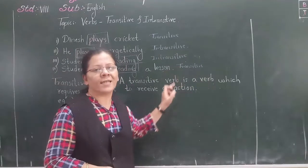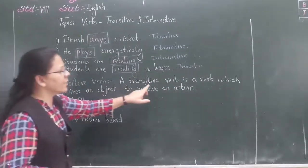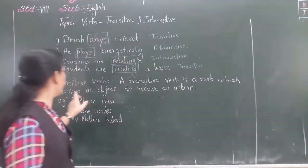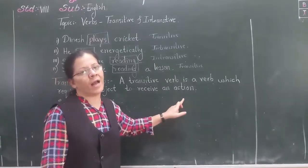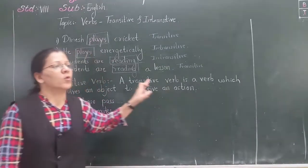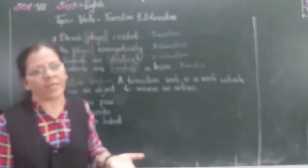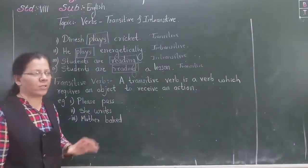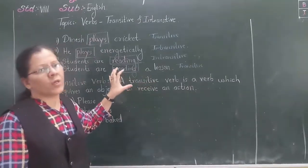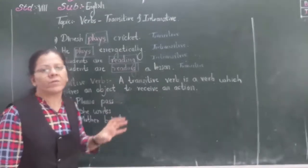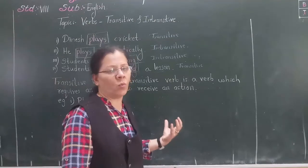So let us see the definition of transitive verb. A transitive verb is a verb which requires an object to receive an action. So if there is a receiver of the action, then that verb is said to be transitive verb.